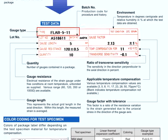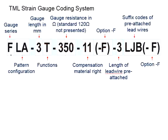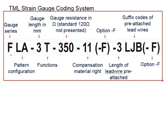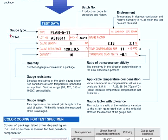This is referring to the type of stringage. And this will be the coding system which we have discussed in our previous video. We also have the log number as well as the batch number.